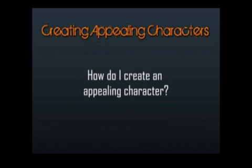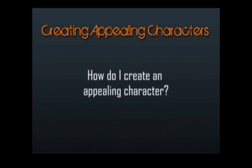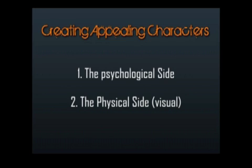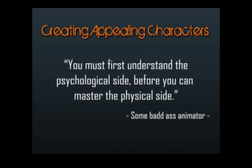Now that we know what an appealing character is, how do we go about creating one? In order to do that, you first have to know that there are two sides to every character, and both are equally important. Each character has a psychological side and a physical side. You have to know, feel, and understand the psychological side of your character before you can effectively design and animate the physical side. So before we get into drawing the physical or visual side of your character, we need to go over the psychological side first.